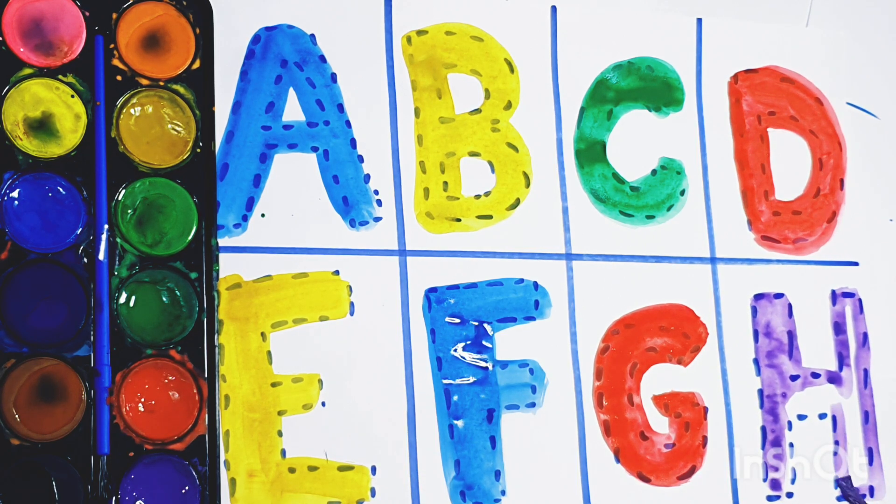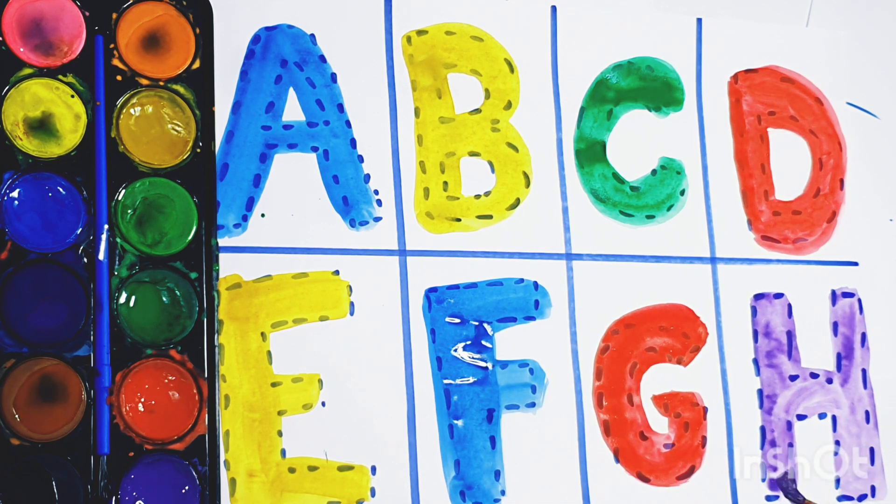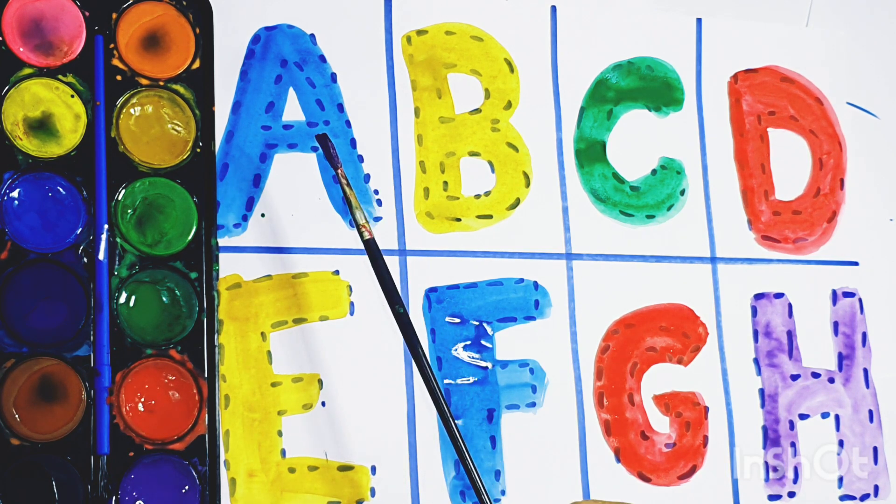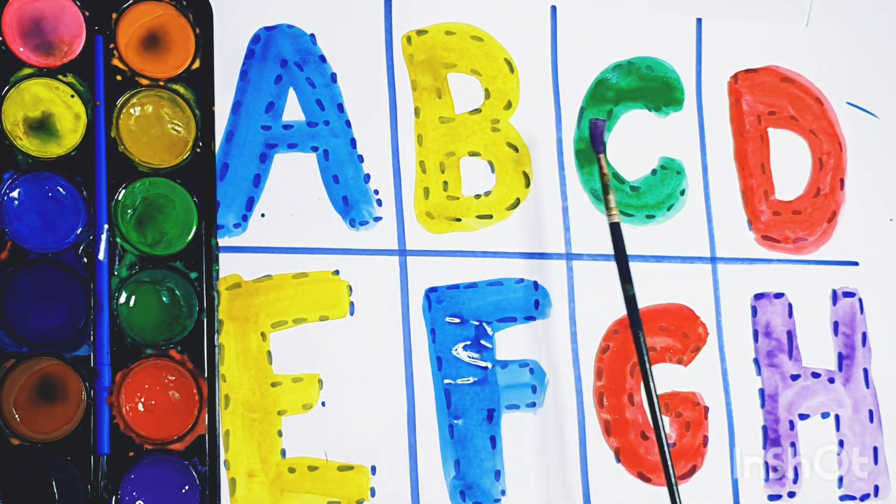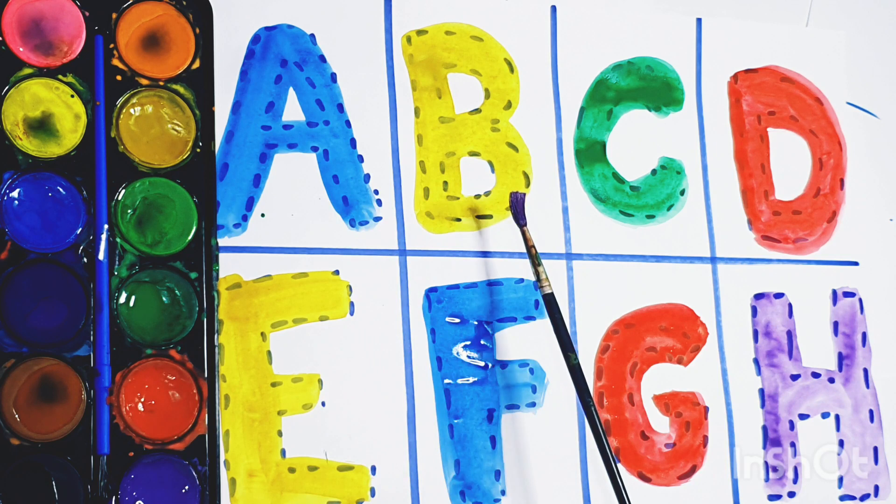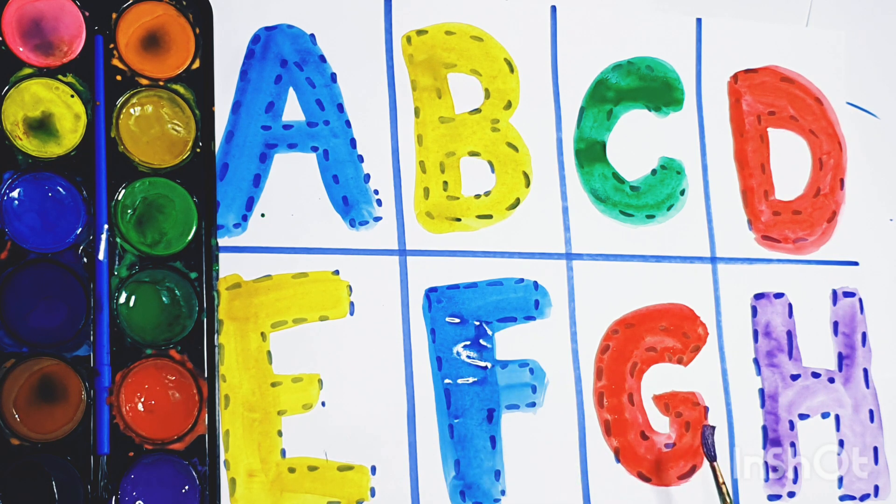H for House. So kids, what we learn today? We learn A, B, C, D, E, F, G, H. Blue color, yellow color, green color, red color, yellow color, blue color, red color.